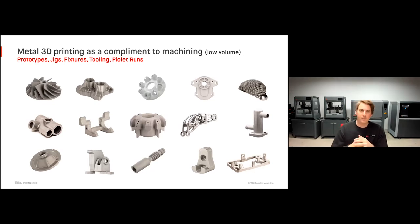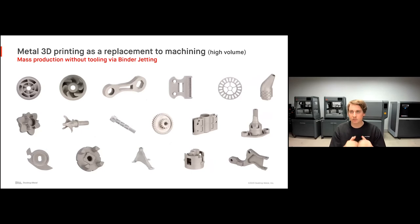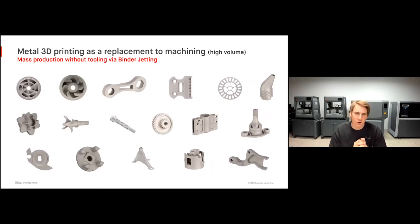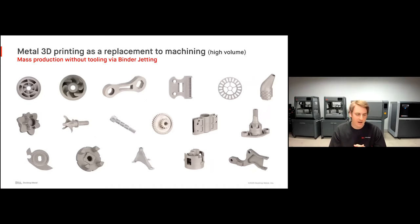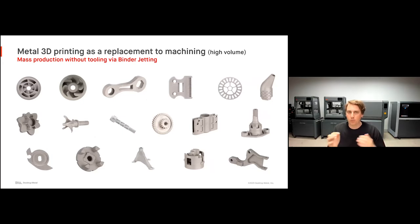When we're talking about metal 3D printing as a replacement to machining, we're really talking about high volume — mass production without the need for any tooling or fixturing via binder jetting. We'll look at a bunch of examples of parts that could have been machined, but were cheaper and faster to produce via binder jetting.